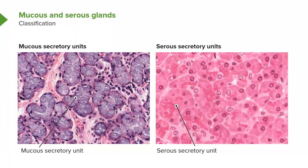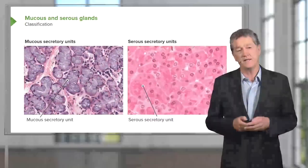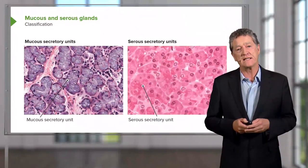Mucous secreting cells, or mucous secreting units — we call them acini as well, which I'll explain later on — they secrete proteins that are glycosylated with anionic oligosaccharides. Because of that, these secretory products are water soluble. So depending on the fixatives you use, often these secretory products are lost from the cell, though here they've been a little bit retained.